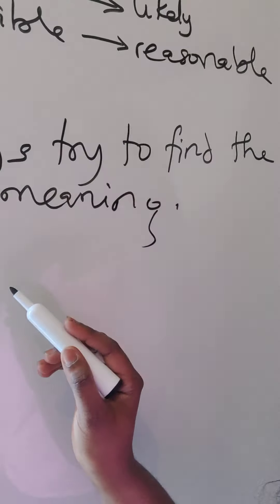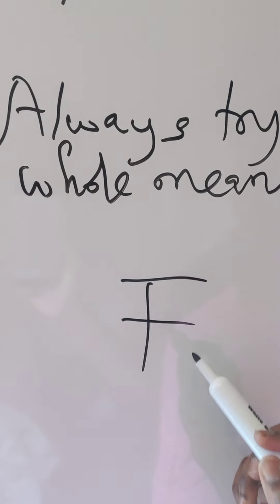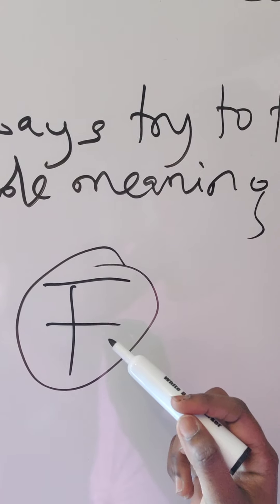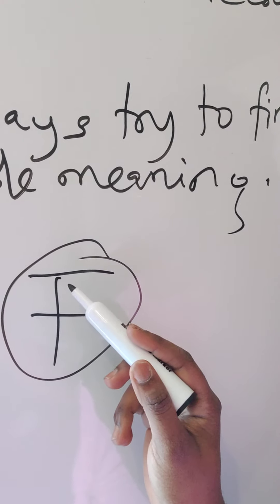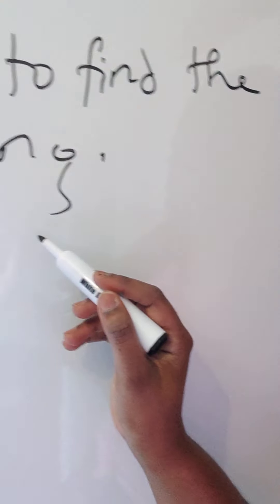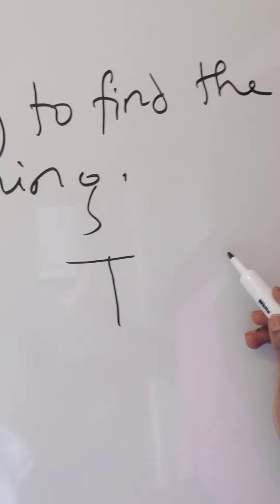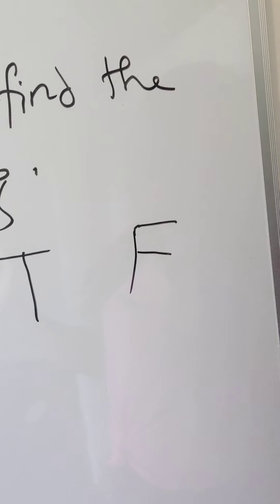You can write 'T' instead of 'True' on your answer sheet, but make sure your handwriting is clear. Some people write 'False' in a way that looks like 'True' with a line through it — that's very confusing. Make sure your True and False are clearly written and legible, so the examiner is not confused. If they can't decipher what you've written, you won't score any marks for that question, even if your answer is correct.